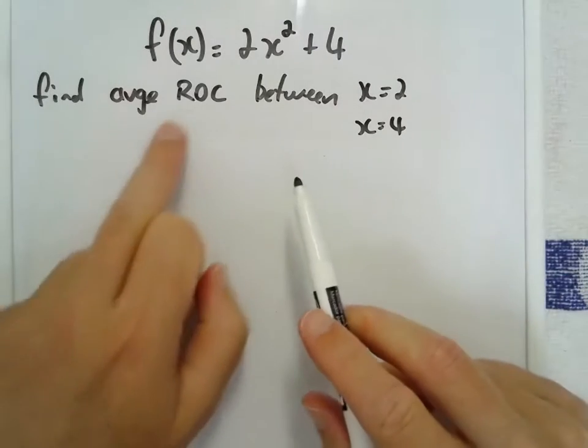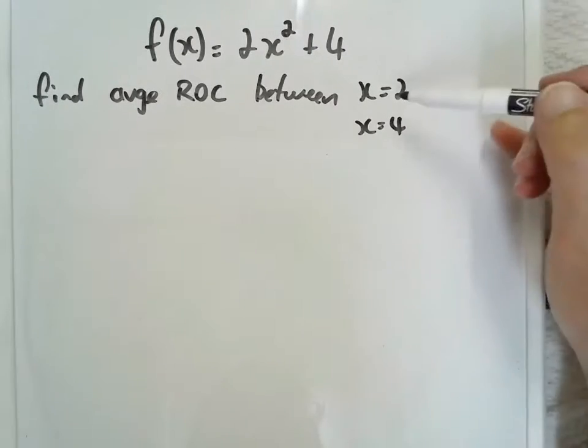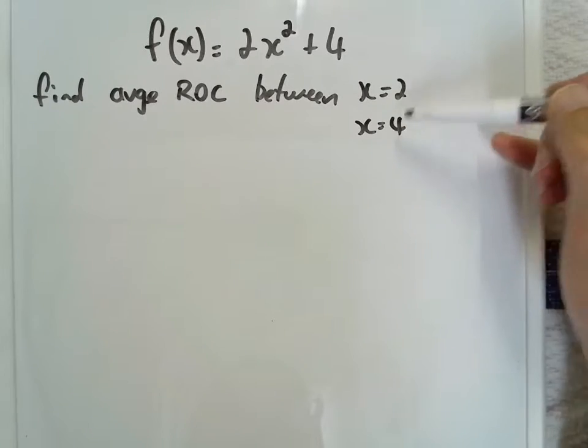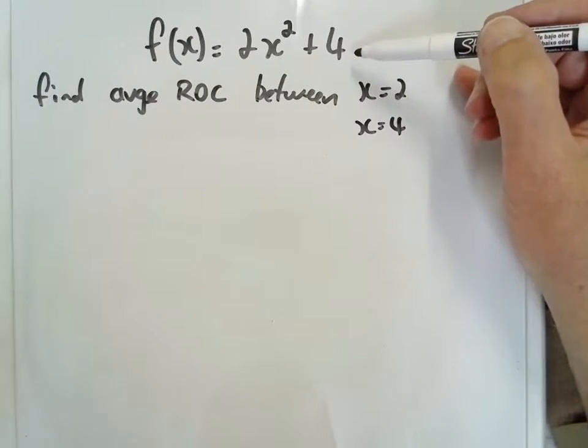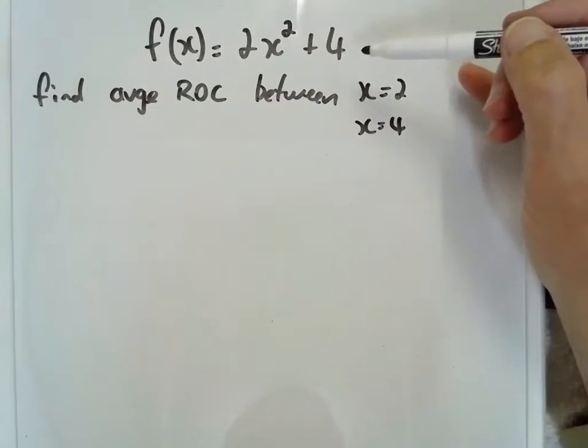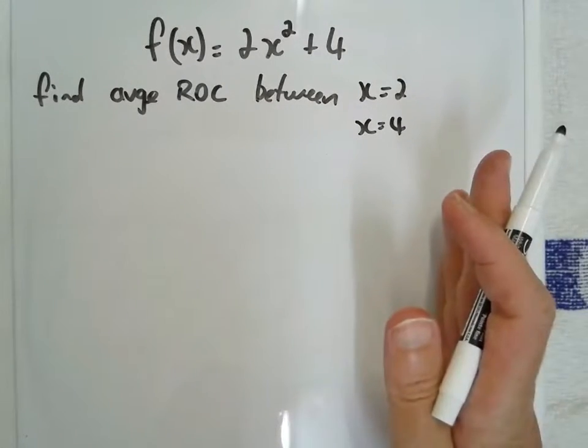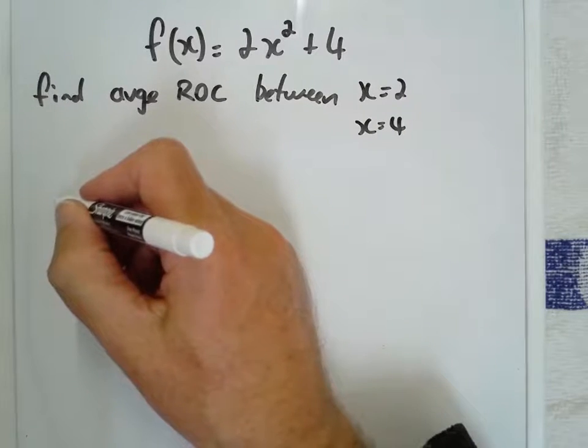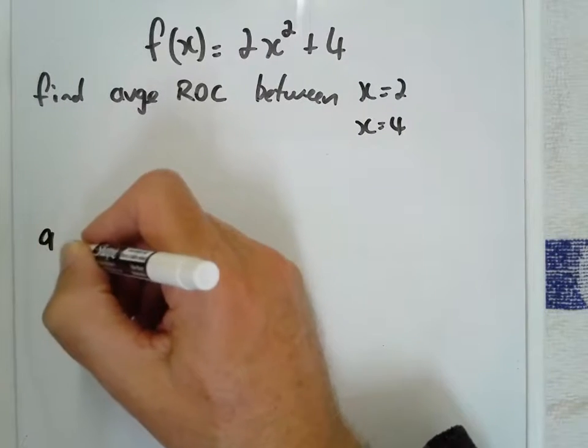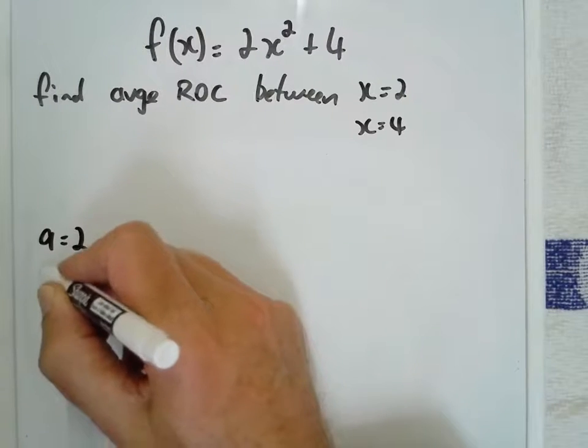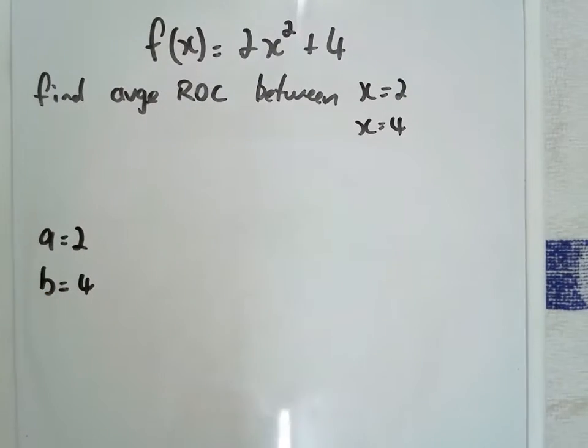Okay, so we're going to find the average rate of change between x equals 2 and x equals 4 of this function up here. So remember, we're going from 2 to 4, so I'm going to set the first point A to be 2 and B to be 4.